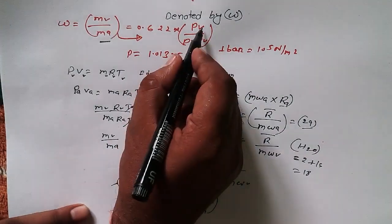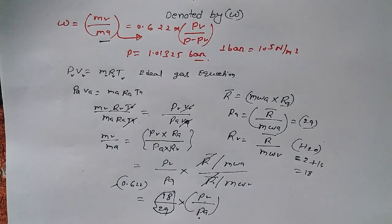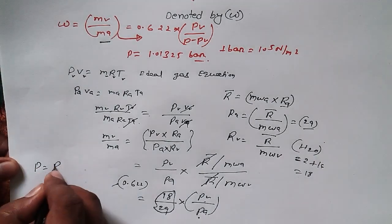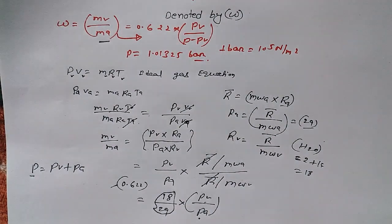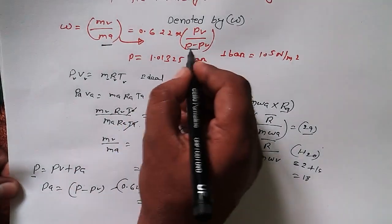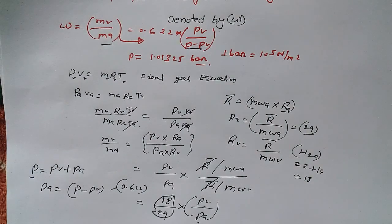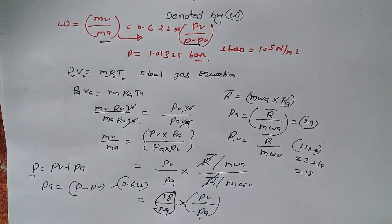Now, Pa is the partial pressure of air. We know that total pressure P equals Pv plus Pa, so Pa equals P minus Pv. Substituting, we write Pv upon P minus Pv. This is how we arrive at the formula omega equals 0.622 times Pv divided by P minus Pv, which is the equation for specific humidity or humidity ratio.